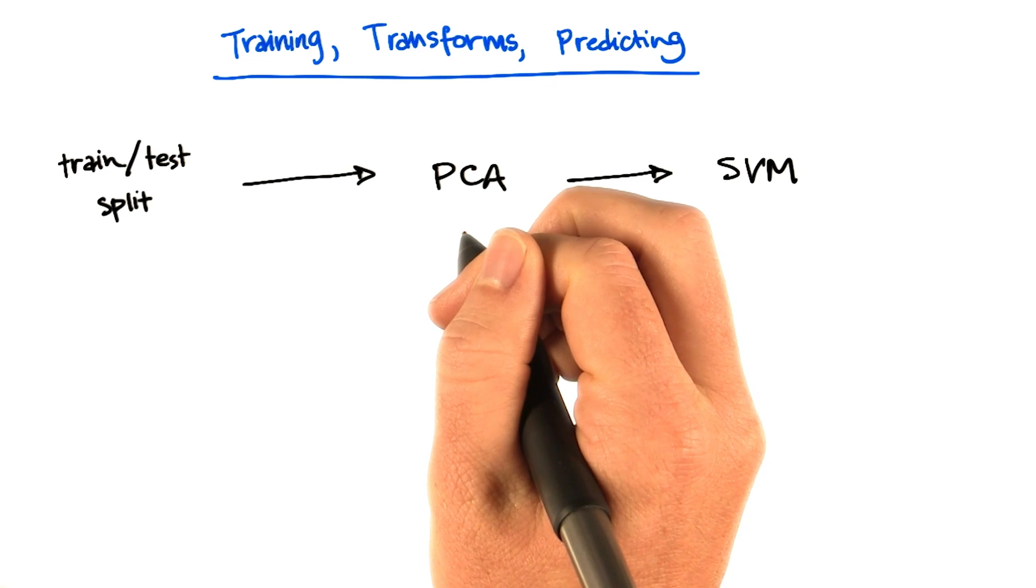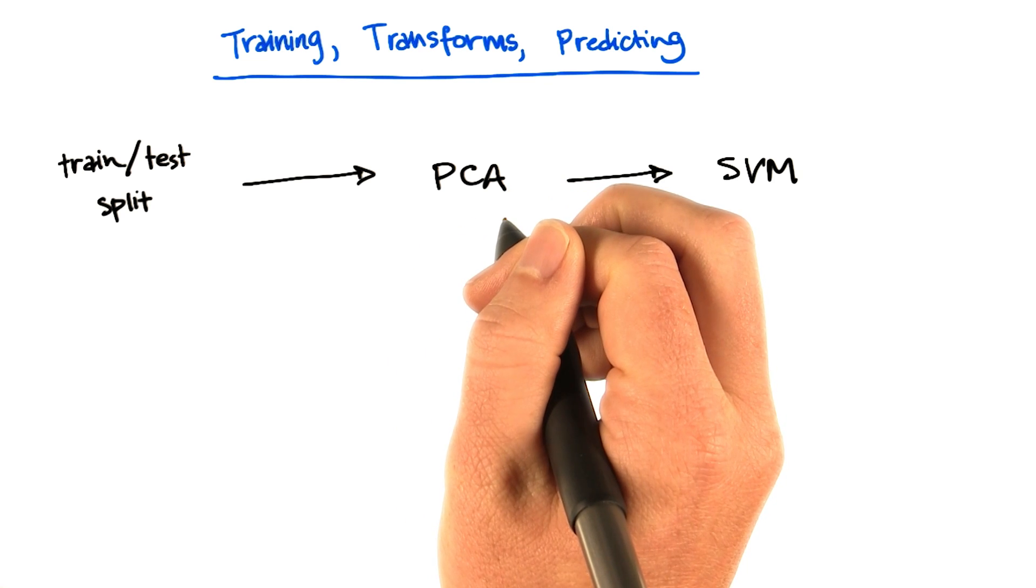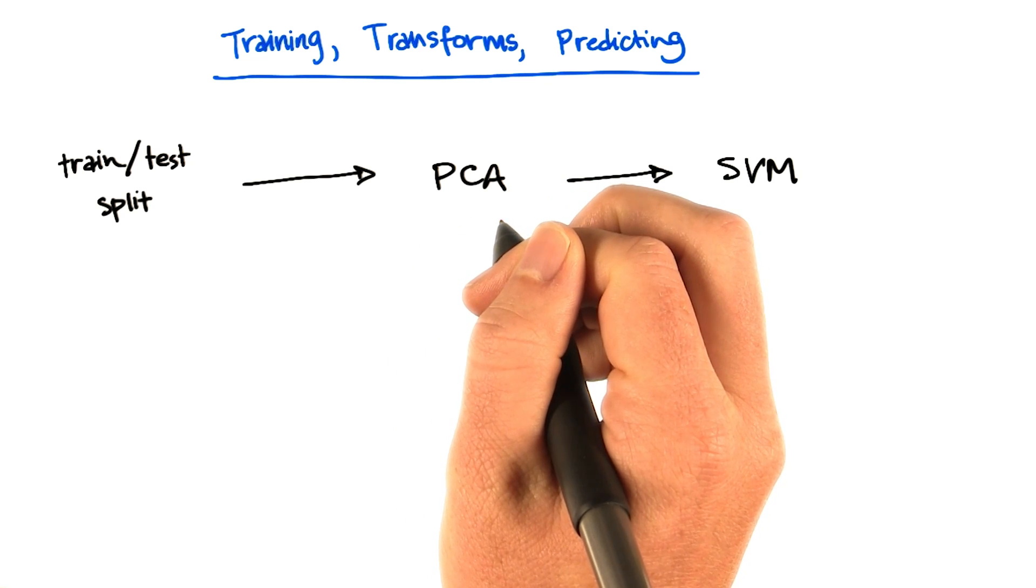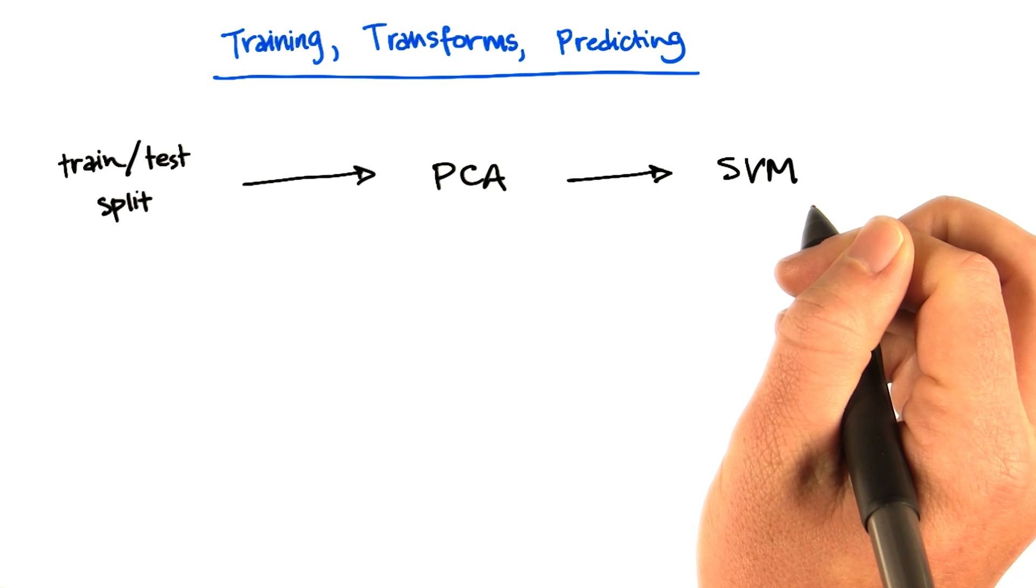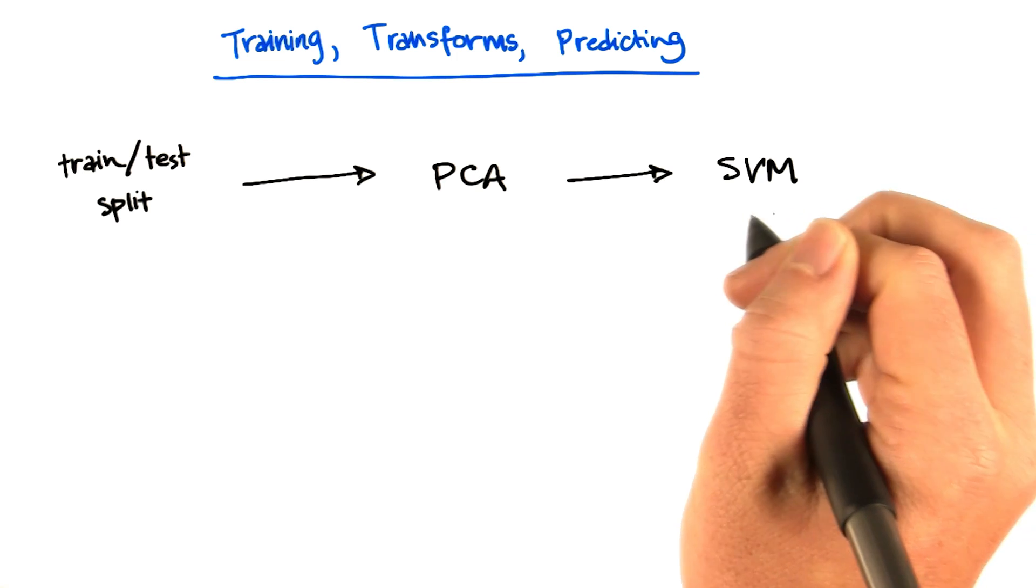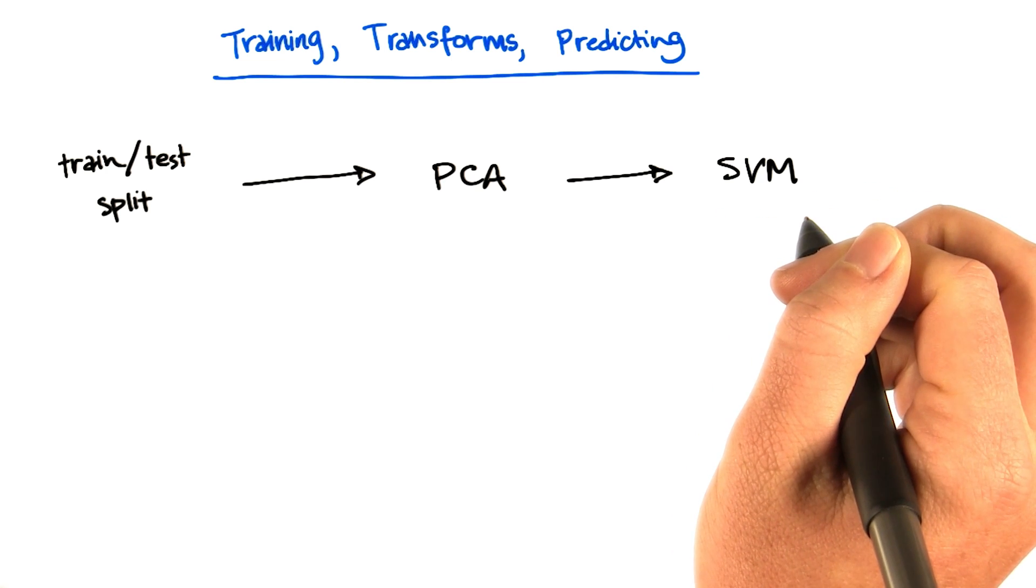Then the next thing you want to do is apply PCA, a feature transform. And then you want to take a few of your leading principal components and put them into an SVM, a classification algorithm.